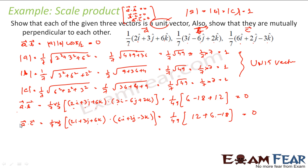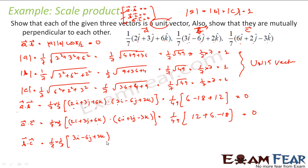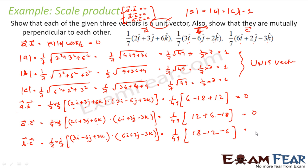Similarly, B dot C: A dot B is done, A dot C is done, B dot C is left. Taking 1 by 7 times 1 by 7 outside, B vector is 3i minus 6j plus 2k, dotted with 6i plus 2j minus 3k. This is 1 by 49 times: 3 into 6 is 18, minus 6 into 2 is minus 12, and 2 into minus 3 is minus 6. That is 18 minus 18, which equals 0.